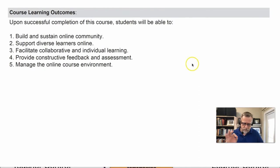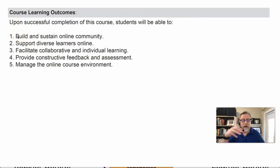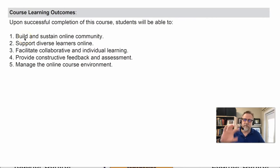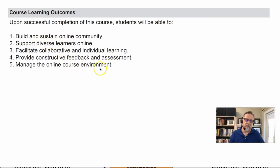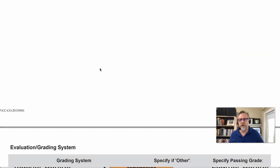Something that is extremely important: the course learning outcomes are identified here. These are the same course learning outcomes I've worked with within the course program. I'm building off of this Education Council approved document, and from this document I'm aligning these outcomes with the program outcomes — the program learning outcomes.